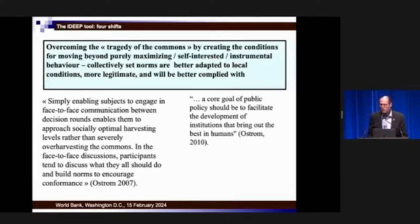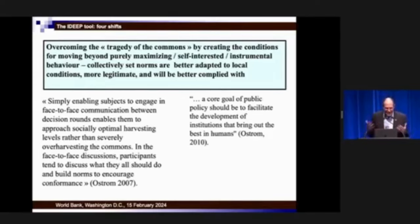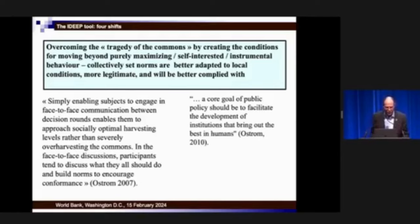Before she was awarded the Nobel Prize in 2009, Elinor Ostrom wrote an article in 2007 where she says: 'Simply enabling subjects to engage in face-to-face communication between decision rounds enables them to approach socially optimal harvesting levels rather than severely over-harvesting the commons.' This was a response to the tragedy of the commons of Garrett Hardin. In face-to-face discussions, participants tend to discuss what they all should do and build norms to encourage conformance.